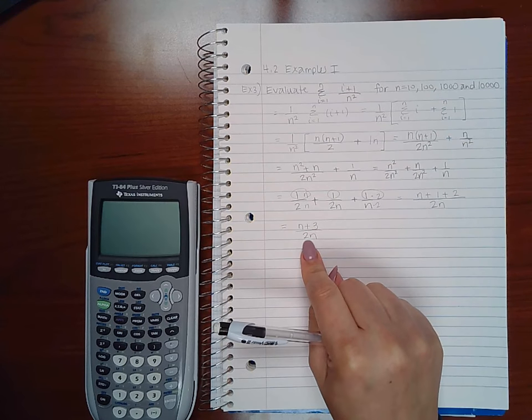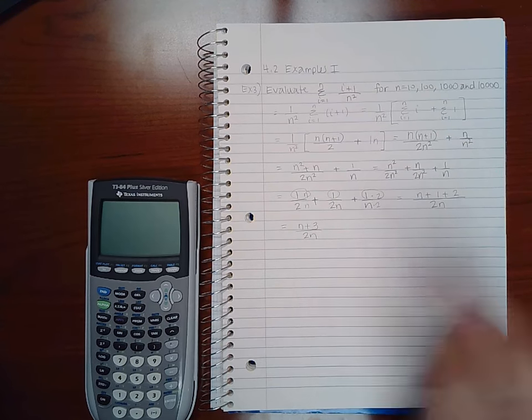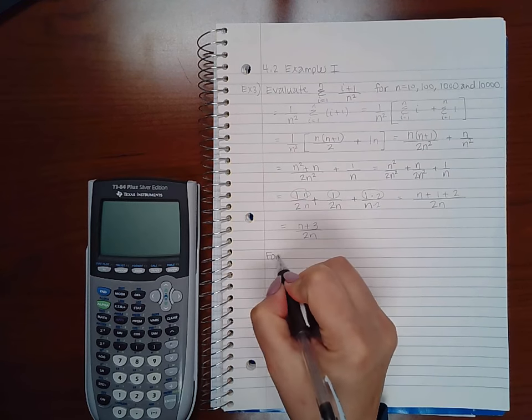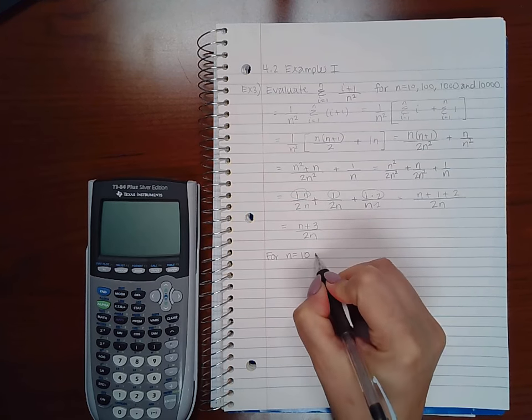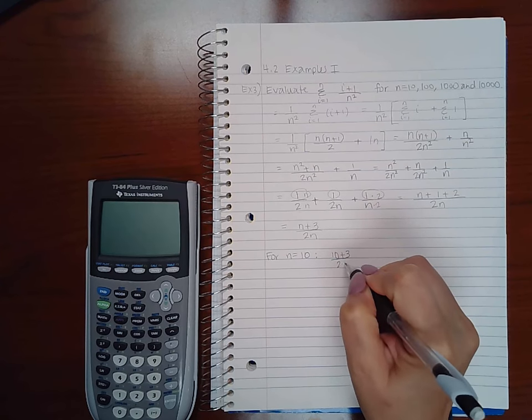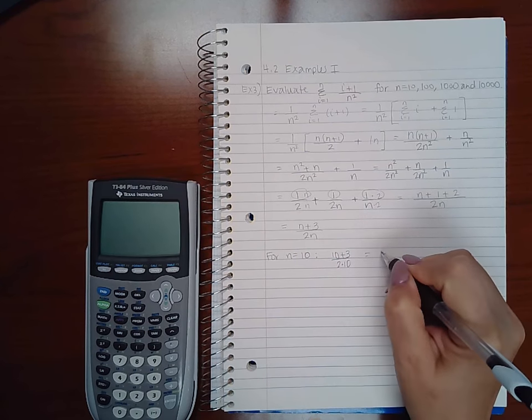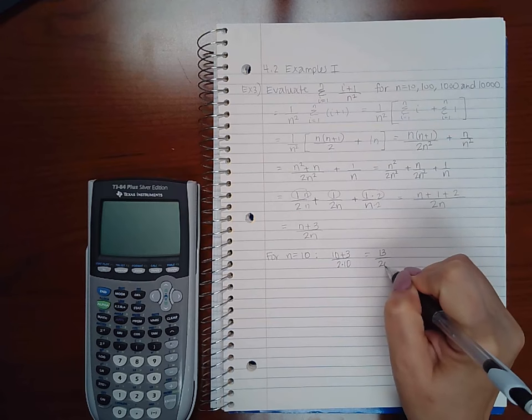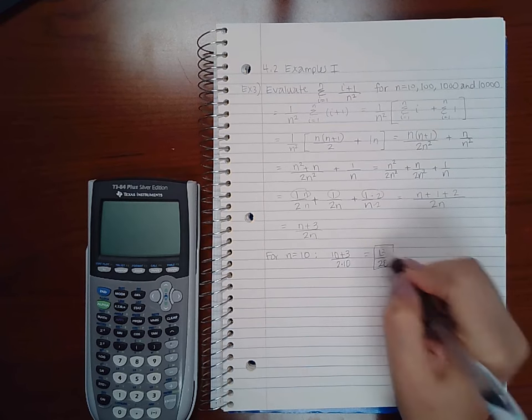Now depending on what the n is, this number will be different. So for n equal to 10, we get 10 plus 3 over 2 times 10, which happens to be 13 over 20. That's for n equal to 10.